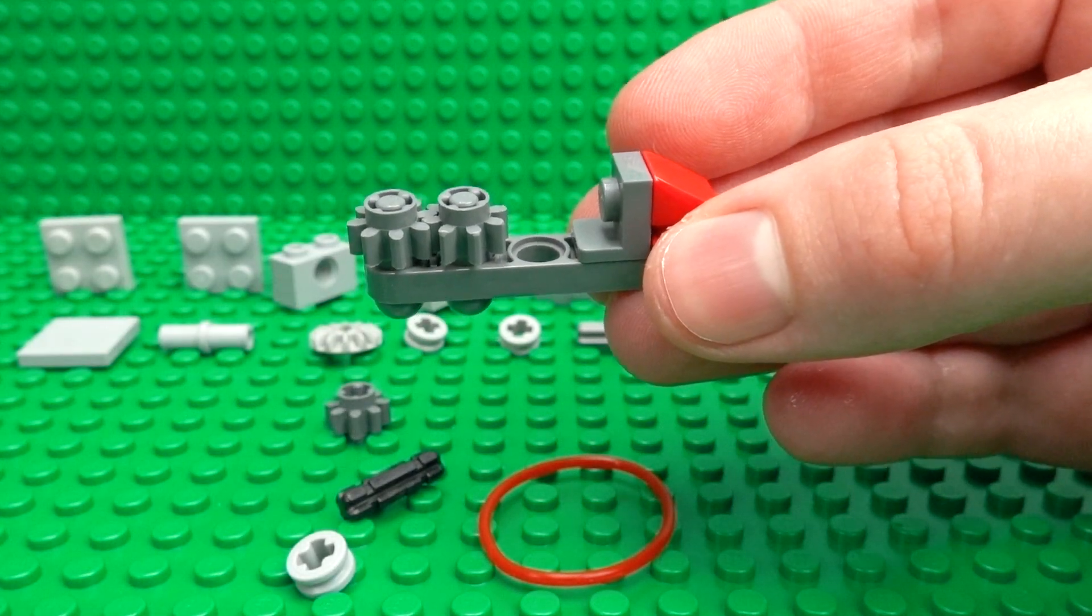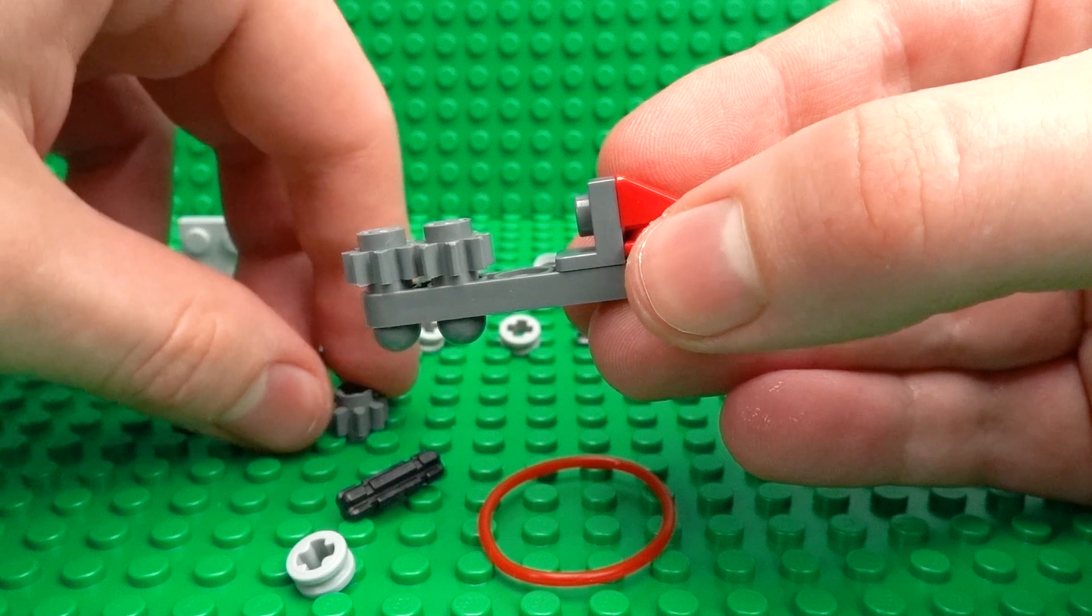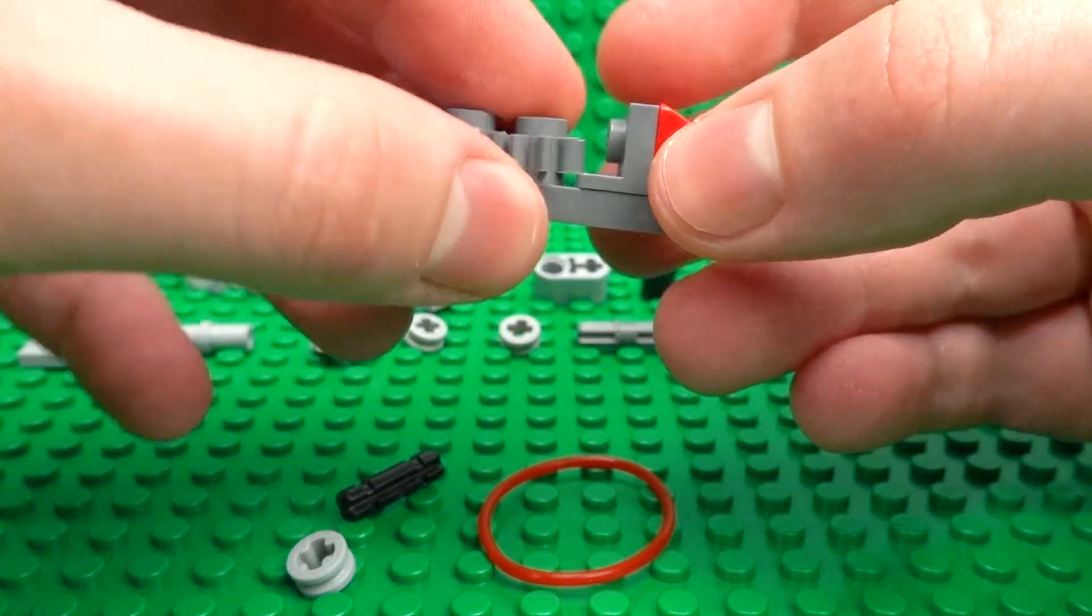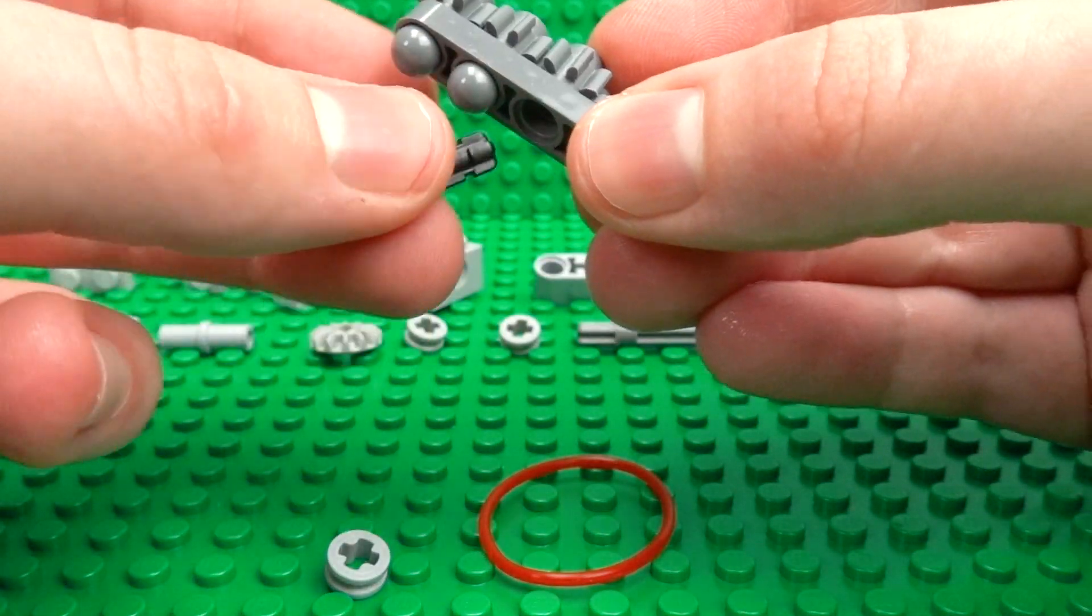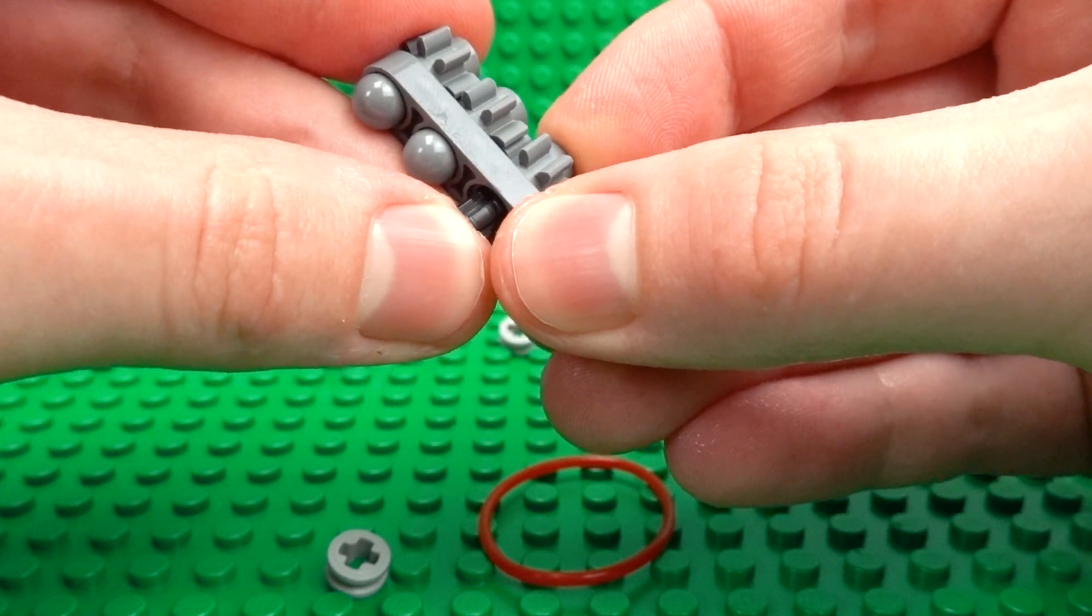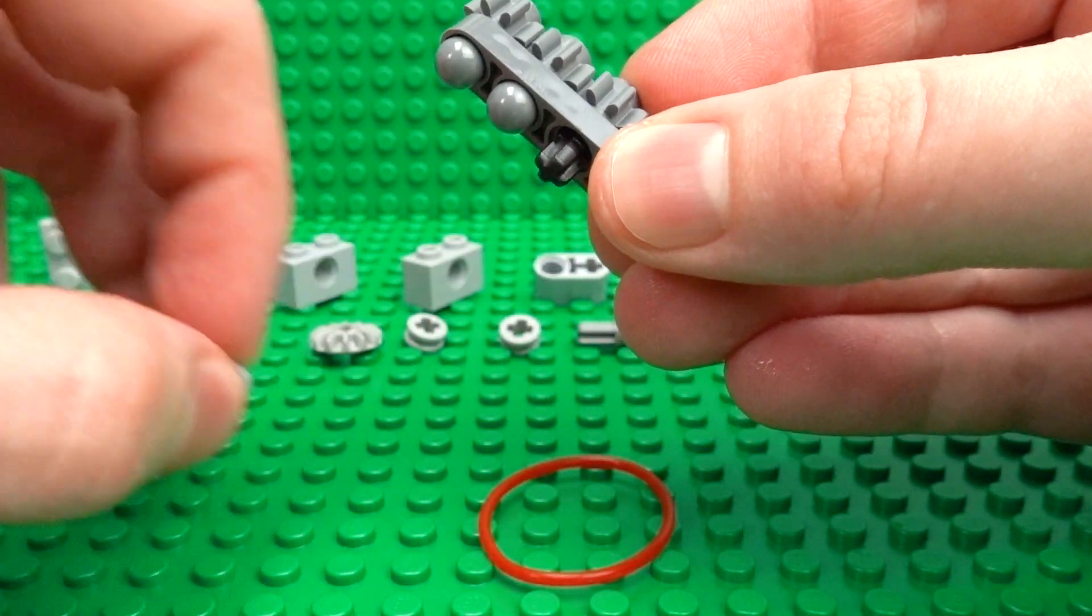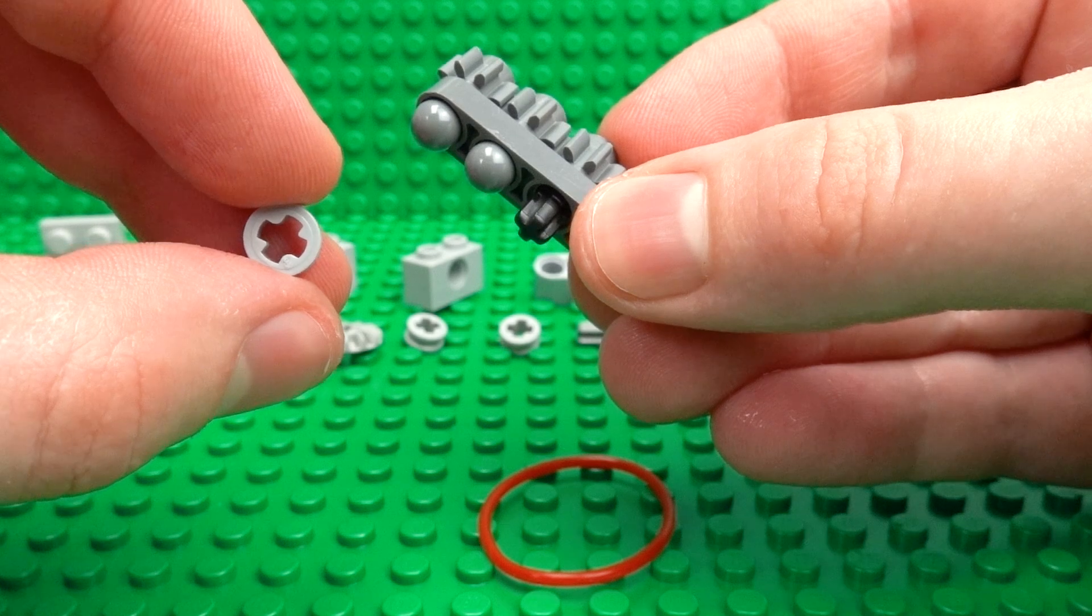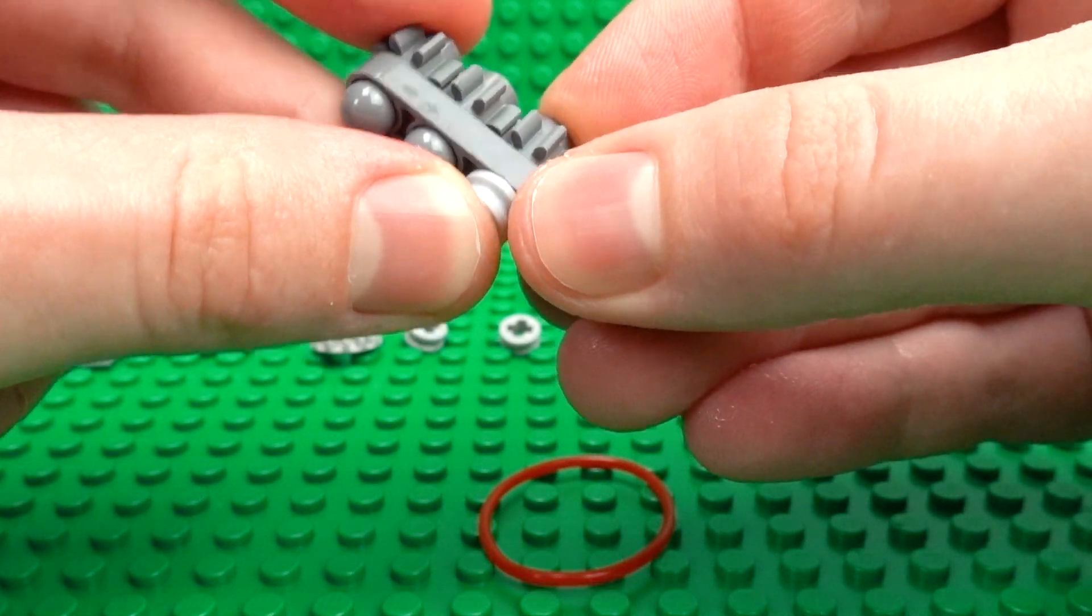Then for this third space, simply add a gear, but this time add a 1x2 Technic axle just like that, and a 1x1 Technic half bush.